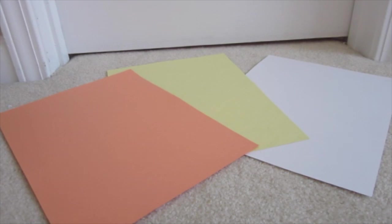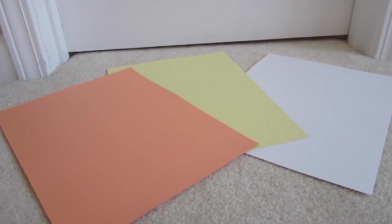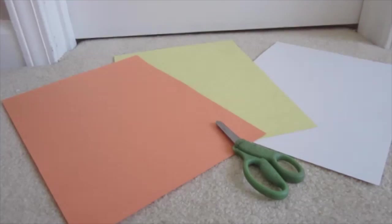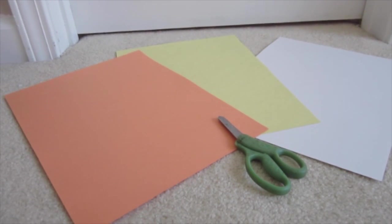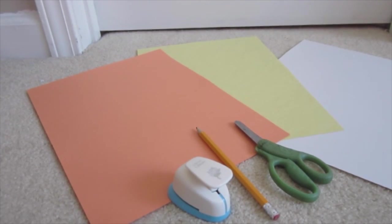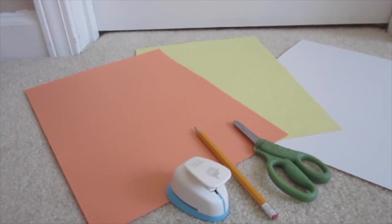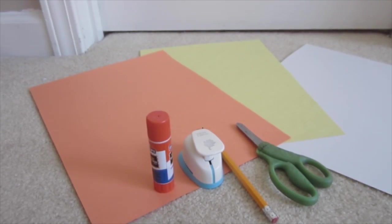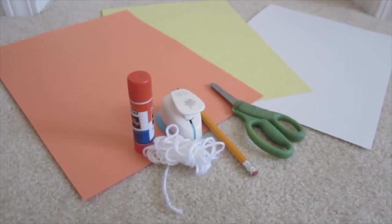To start off, you'll need some colored paper in orange, yellow, and white. You'll need scissors to cut the paper, pencils to trace the design, some type of hole puncher (I used this leaf one from Michaels since it is fall), a glue stick, and some yarn or string.